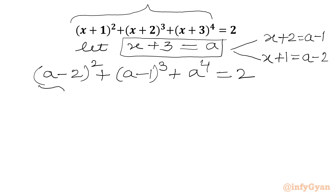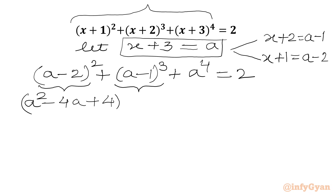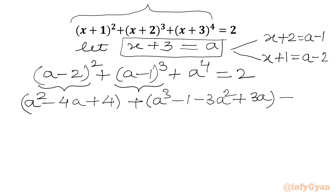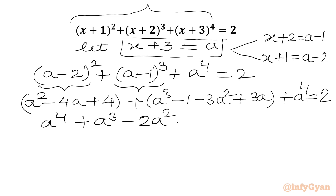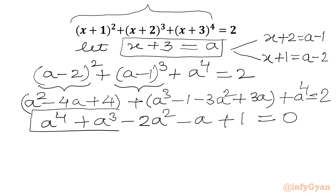Now we will use the a minus b whole square formula here. So I will write a square minus 4a plus 4. Now we will write the a minus b whole cube formula. So I will get a cube minus b cube minus 3a squared b plus 3ab squared. Then we have a power 4. RHS is 2. After expanding and simplifying, we get a power 4 plus a cube minus 2a square minus a plus 1 equal to 0. This is our quartic equation.